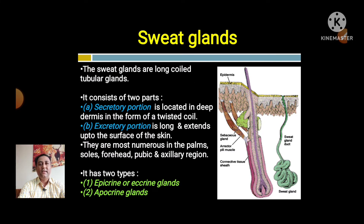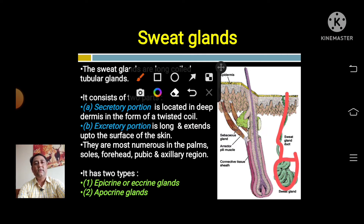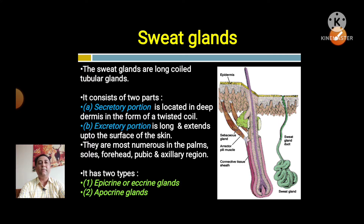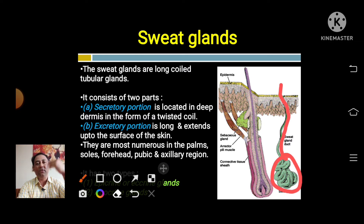Sweat glands are long coiled tubular glands. They consist mainly of two parts: a secretory portion and an excretory portion. The secretory portion is located in the deep dermis in the form of twisted coils. The excretory portion is long and extends up to the surface of the skin. The coiled part at the bottom does the secreting, and the long portion opening onto the skin surface is the excretory portion.